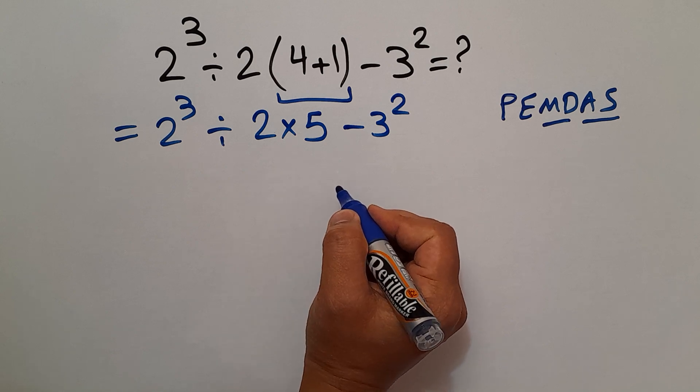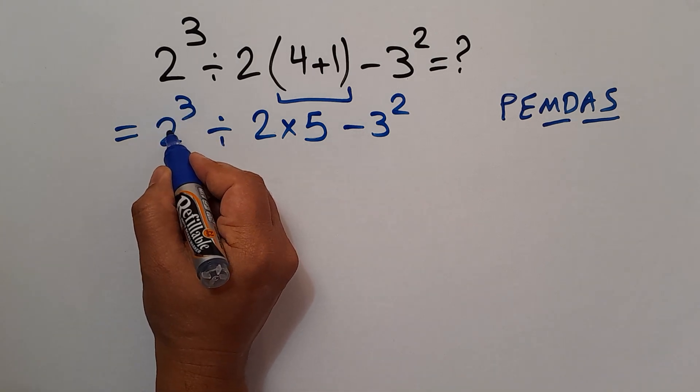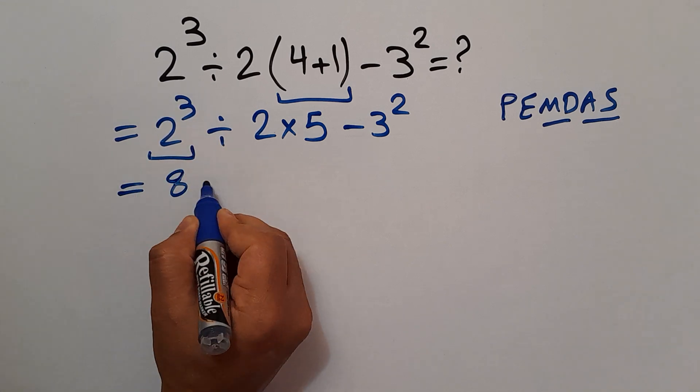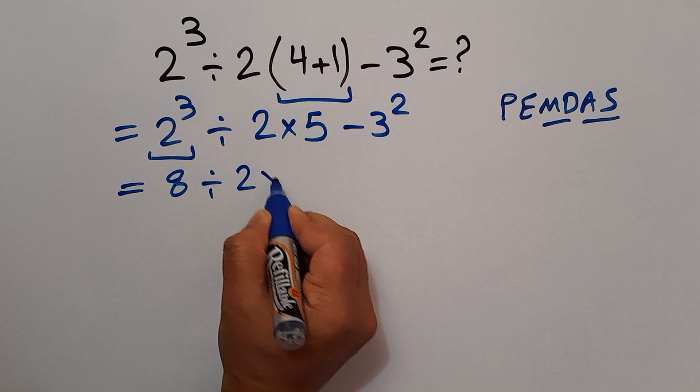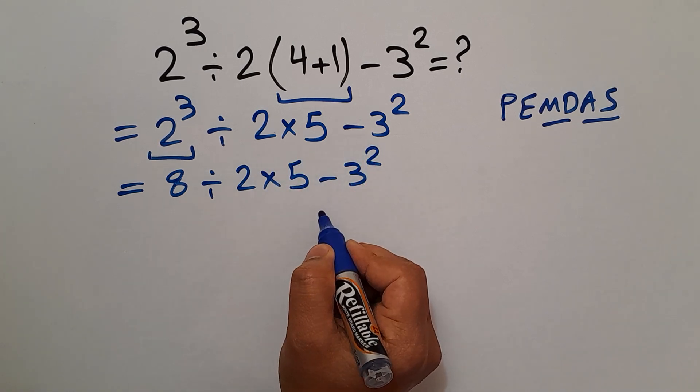Now we do this exponent: 2³ equals 8, so 8 ÷ 2 × 5 - 3².